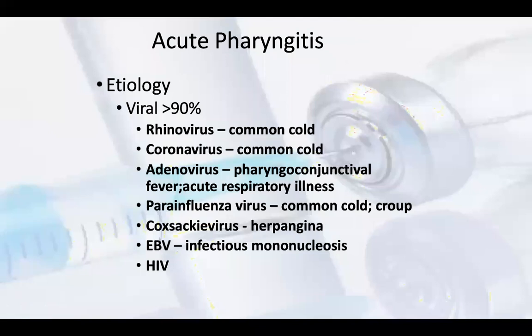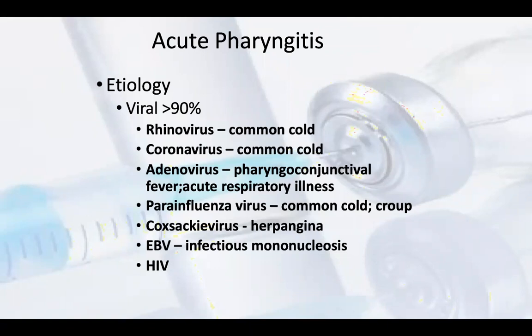90% of pharyngitis is caused by virus. The most common viruses are adenovirus, coronavirus, and common cold agents. Adenoviruses cause pharyngoconjunctival fever and acute respiratory illness. Parainfluenza virus causes pharyngitis and common cold. Enterovirus causes herpangina. EB virus causes infectious mononucleosis and HIV can also cause acute pharyngitis when viral.